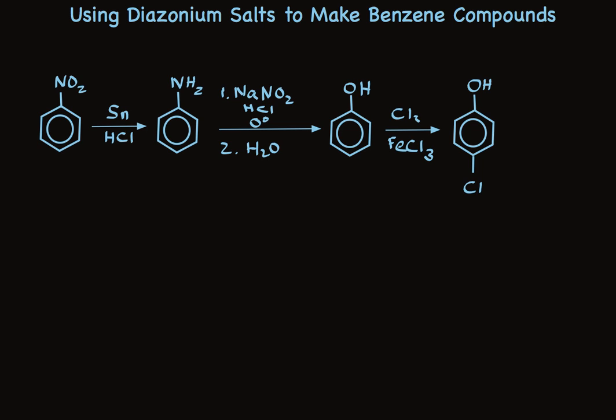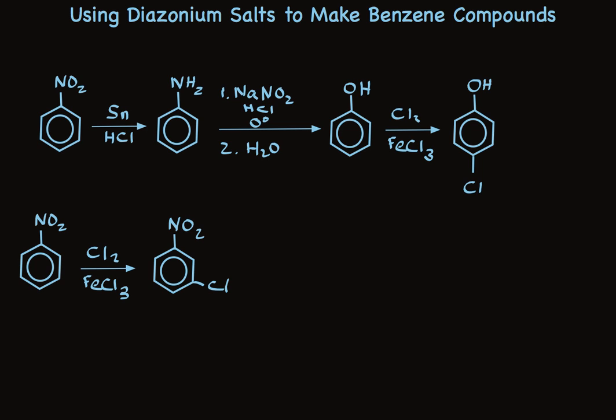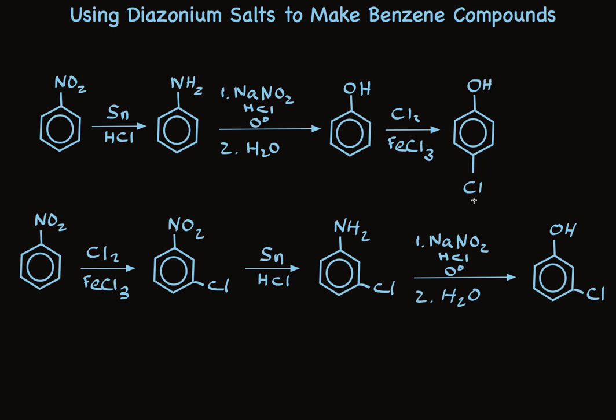But we can put these substituents on in a different order. If we chlorinate the nitrobenzene, we get meta-chloronitrobenzene, then reduce, making meta-chloroaniline, and then replace the NH2 group to make the phenol. In the first sequence, we make para-chlorophenol; in the second sequence, we make meta-chlorophenol. Again, we're doing the reactions in the order that lets us dictate the regiochemistry to be either para or meta.